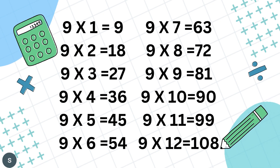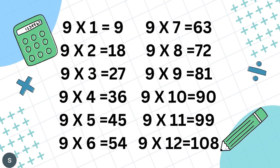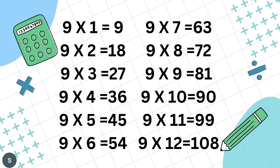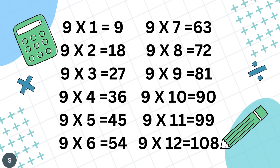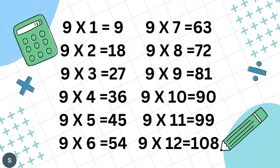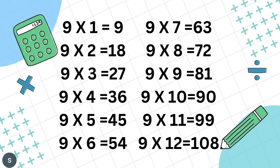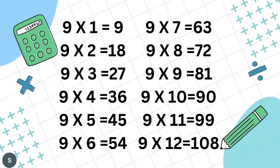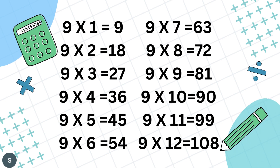9 7's are 63, 9 8's are 72, 9 9's are 81, 9 10's are 90, 9 11's are 99, 9 12's are 108.